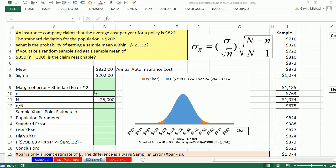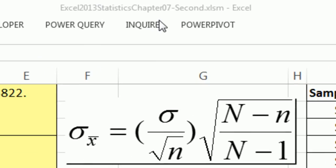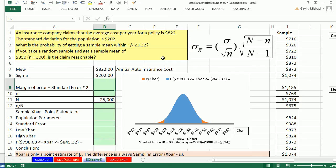Welcome to Excel 2013 statistical analysis video number 47. If you want to download this workbook for chapter 7, and this is the second file, click on the link below the video.